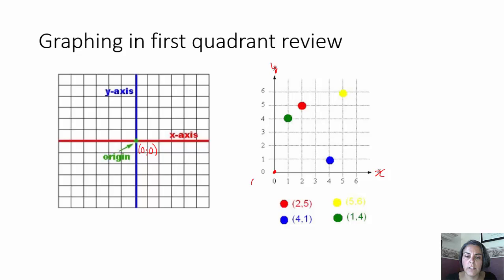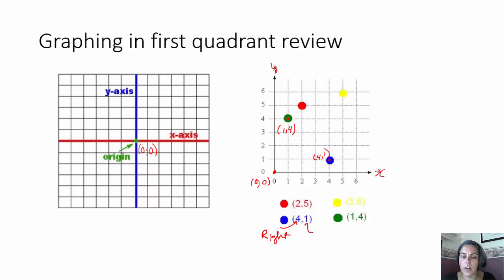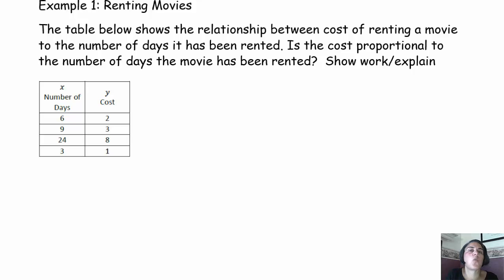In the first quadrant, to graph a point like (1, 4), we go 1 to the right and 4 up. The point (4, 1) is a very different point — that would be 4 to the right and 1 up. So in your first quadrant, the first coordinate tells you to move to the right from the origin, and the second coordinate tells you how far to move up. Quick review of graphing in the first quadrant.